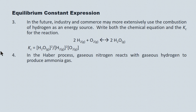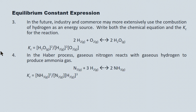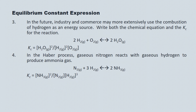One last example: in the Haber process, nitrogen reacts with hydrogen to produce ammonia. Here's the reaction and the Kc expression: the concentration of NH3 squared divided by the product of the concentration of N2 times the concentration of H2 cubed. These are all equilibrium concentrations, of course.